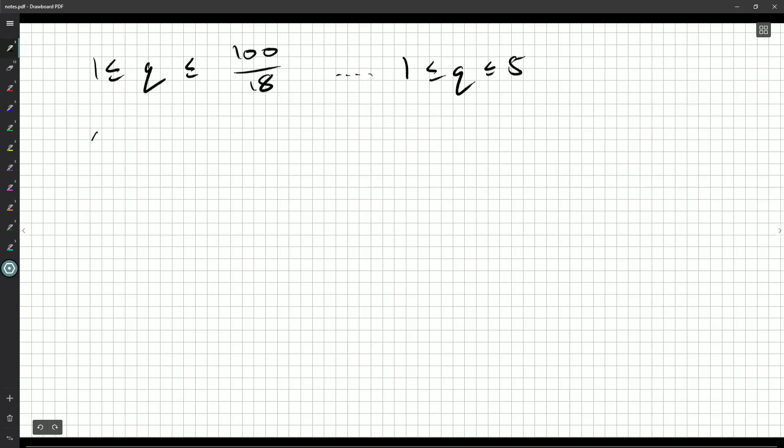So our pairs are going to be, well, p would be 17, 1, and then we'd have 34 and 2. So you just figure out your q value, and then multiply 17 by that to figure out the p value. So 51, and then what's the next one? 68 and 4, 85 and 5, and the next one would be too big.